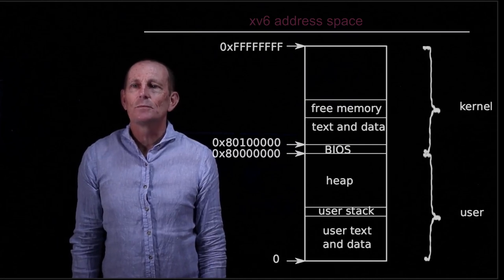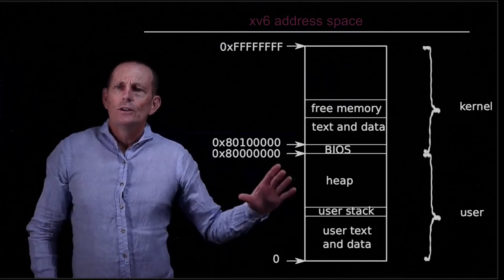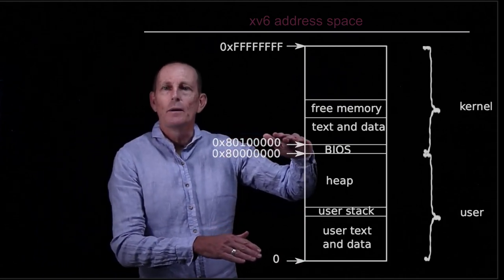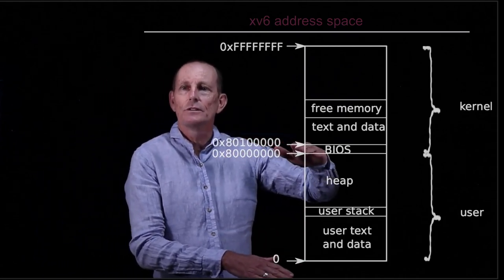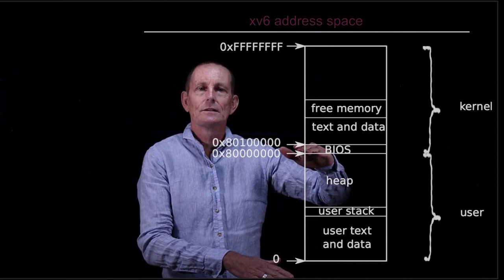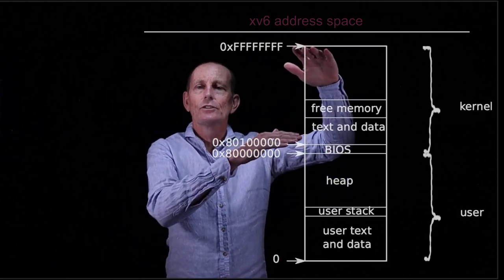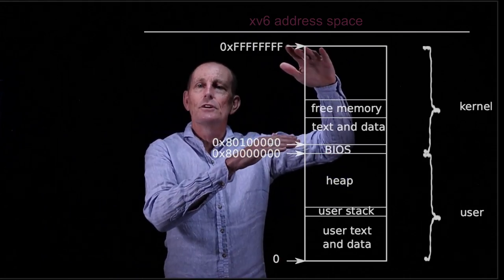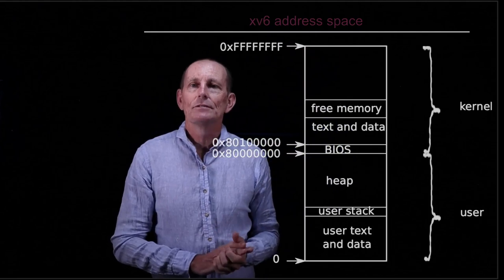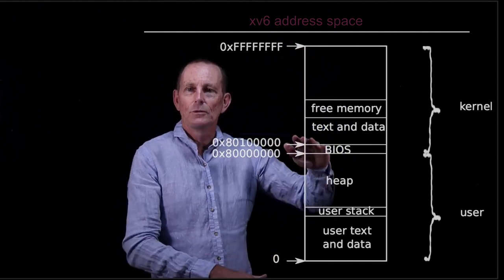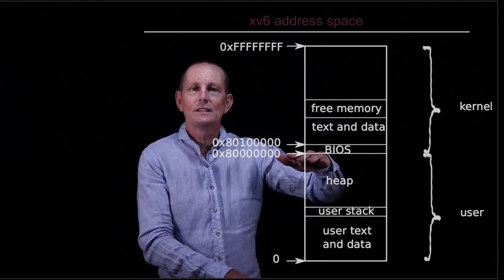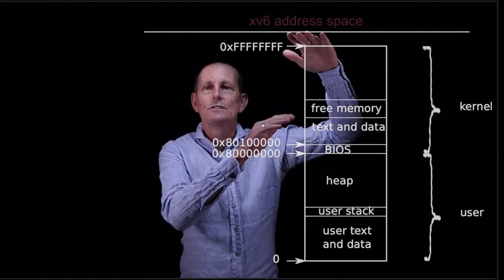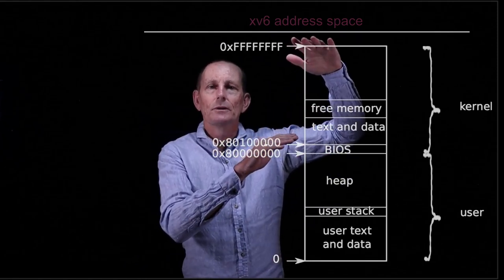Let's talk now about the xv6 address space. The xv6 address space is broken up. We have basically user mode as the first half of the address space, and then the kernel is reserved for the top half of the address space. Page tables are set up so that this is accessible in user mode and this is only accessible in kernel mode.